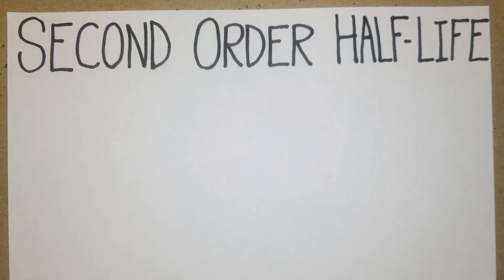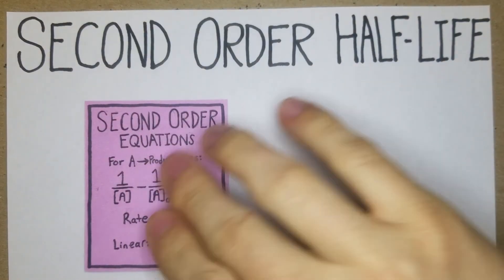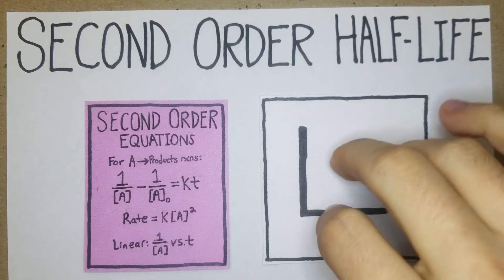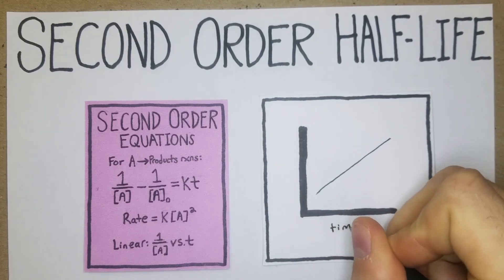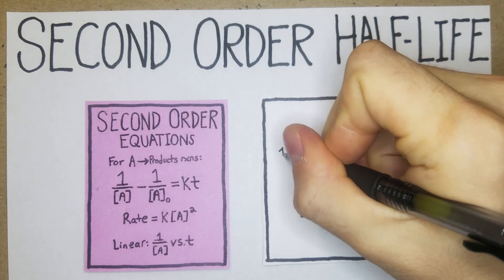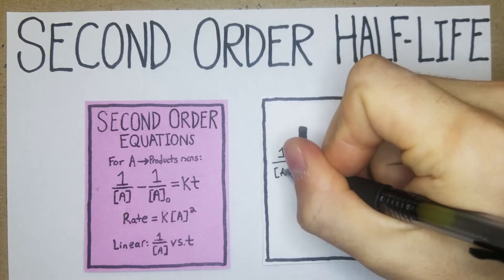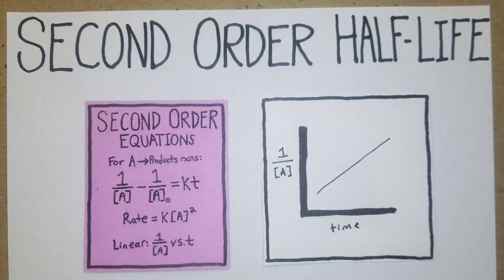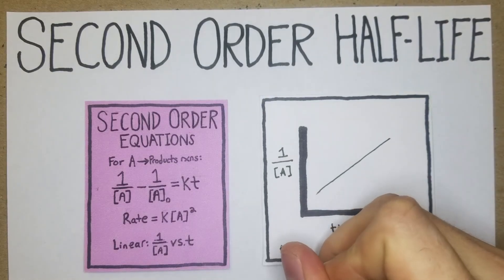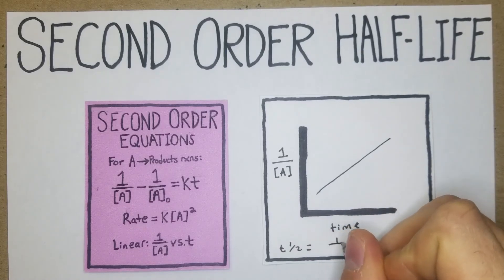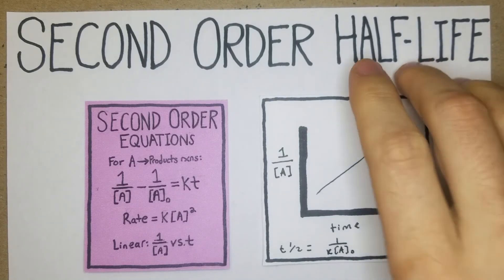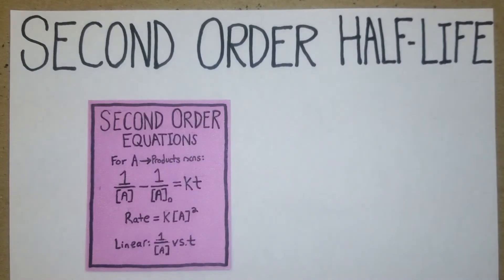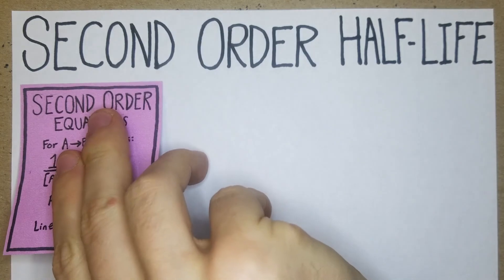In this video we're going to go over some second-order half-life problems. Just like in the previous videos, we'll go over what it looks like on a graph first. If we have time on the x-axis, on the y-axis we're going to have 1 over the concentration of A — that's different from first order, which used the natural log of A. The half-life formula we'll use is t½ = 1 / (k × [A]₀).